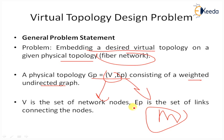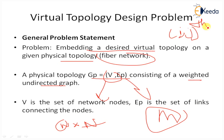A given N×N traffic matrix is considered, where N is the number of nodes in the network. Each element (i, j) represents the average rate of packet traffic from node i to node j. Traffic flows may be asymmetric. The number of wavelength-tunable lasers serves as transmitters, and wavelength-tunable filters serve as receivers at each node.